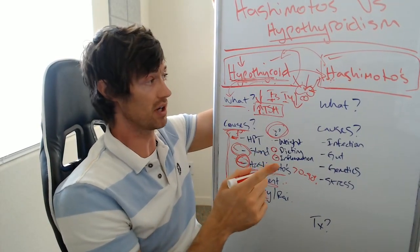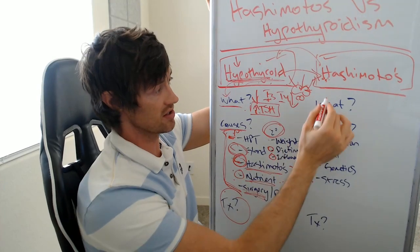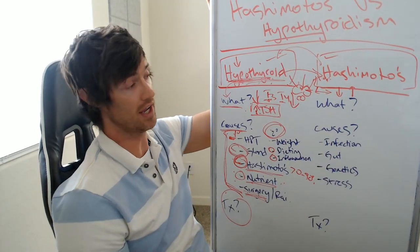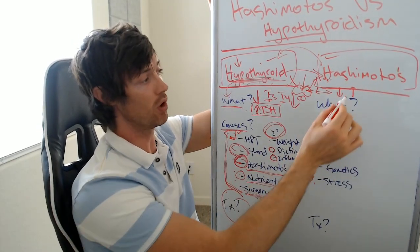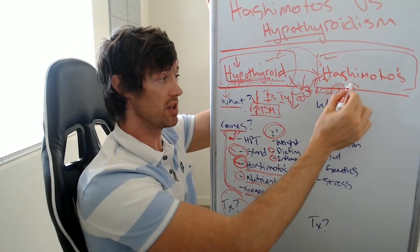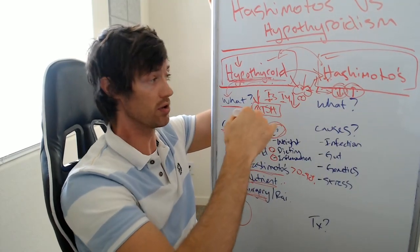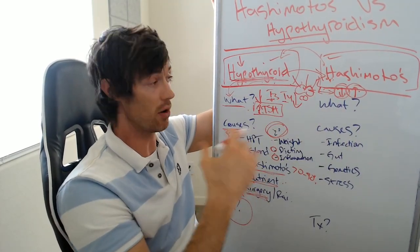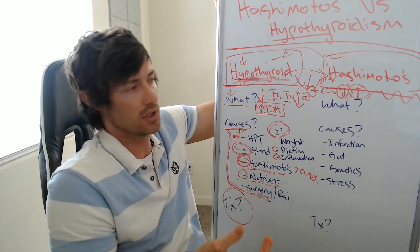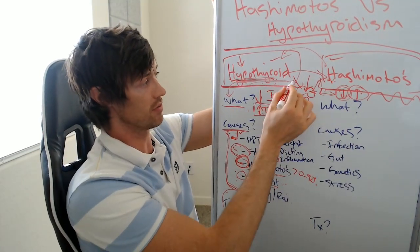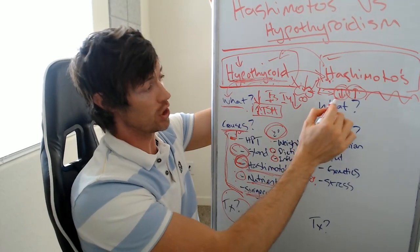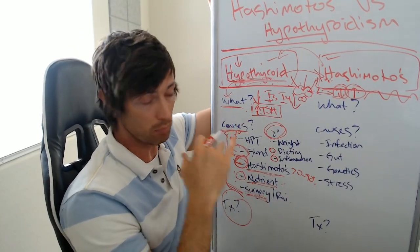Hashimoto's can do three things: it can make your thyroid function completely normal, it can make your thyroid function low, and it can make your thyroid function high. Generally over time it will always end up causing low thyroid function, but some people in the beginning have completely normal thyroid function. Some people alternate between low and high, going back and forth in a kind of roller coaster. People get really confused about whether their thyroid is low or high, and if they don't know they have Hashimoto's, the whole picture is confusing. It usually ends up causing low thyroid permanently if left unchecked.